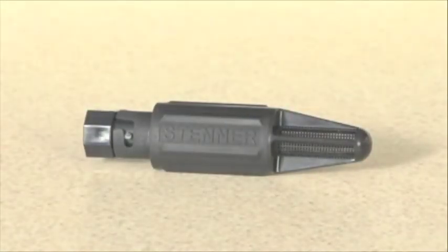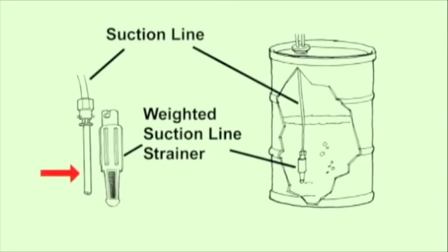Install Stenner's weighted strainer on the end of the suction line and keep the suction line from the nose of the strainer to prevent blockage that could interfere with the pump's priming ability.